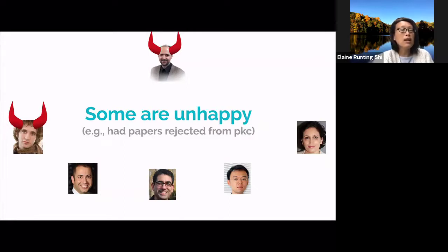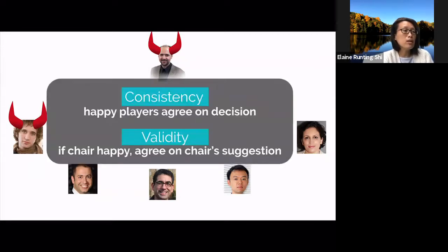Now, the unhappy people can arbitrarily deviate from the prescribed protocol, aiming to disrupt the agreement and prevent the next conference from happening. Even in the presence of such unhappy people, we still would like to guarantee that all the happy cryptographers should nonetheless satisfy consistency and validity.